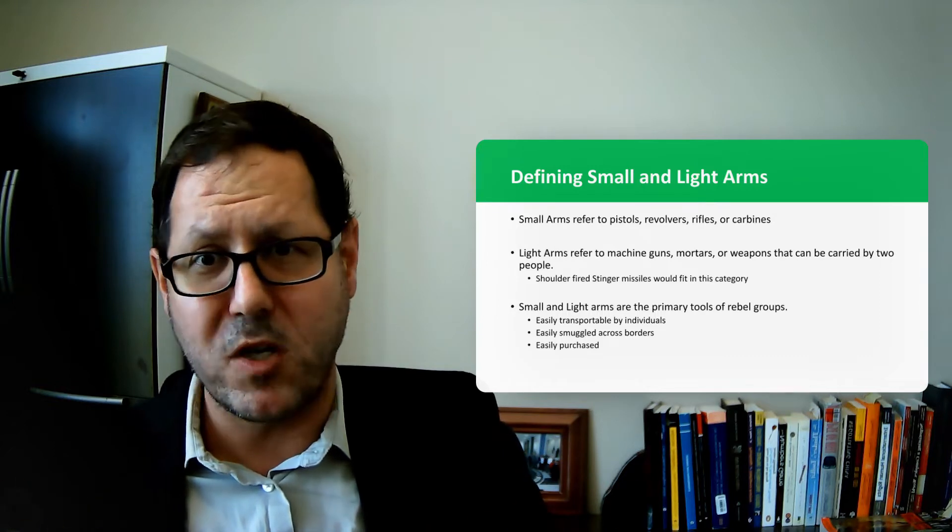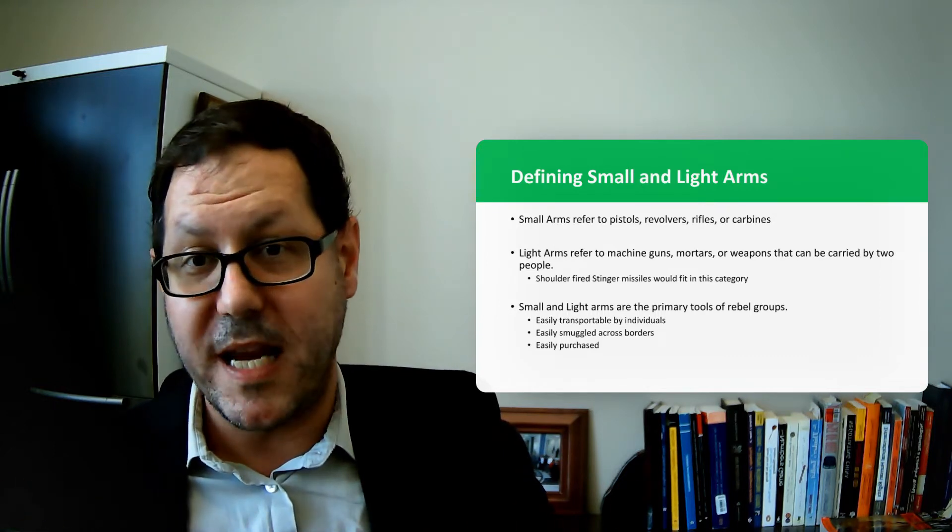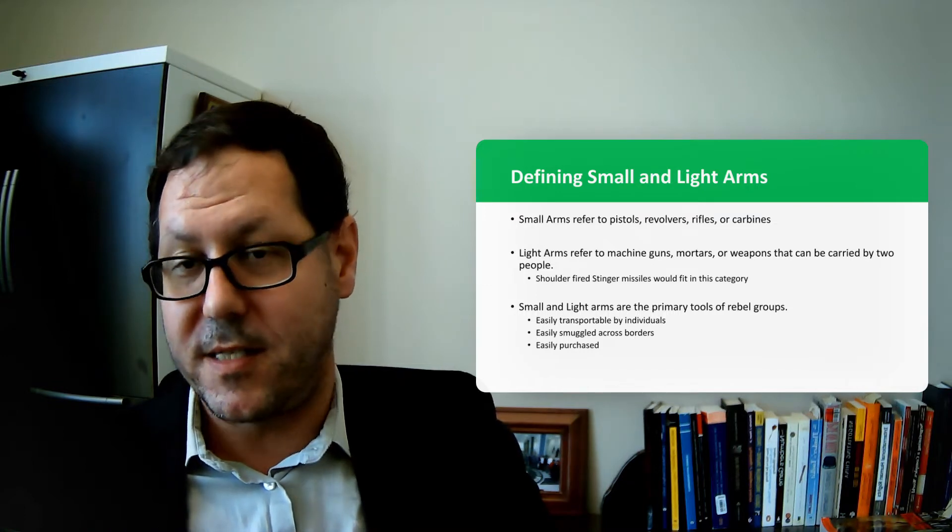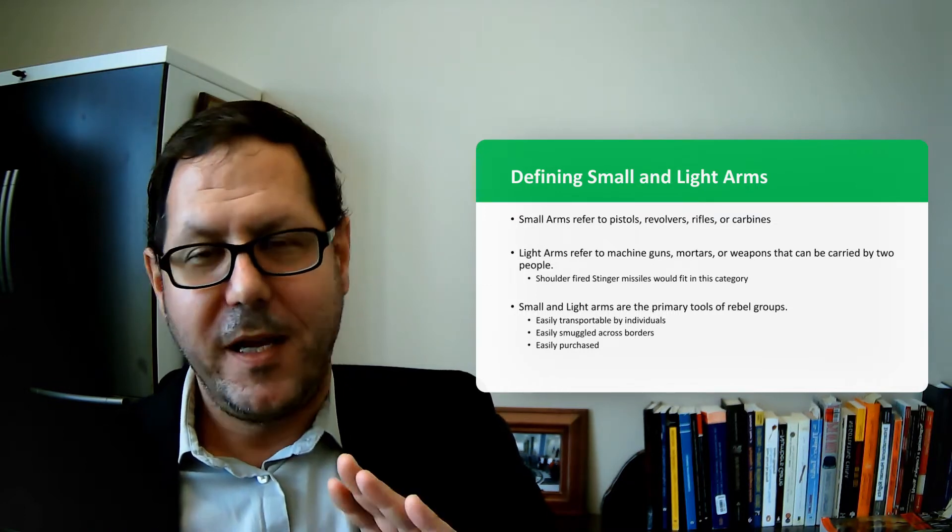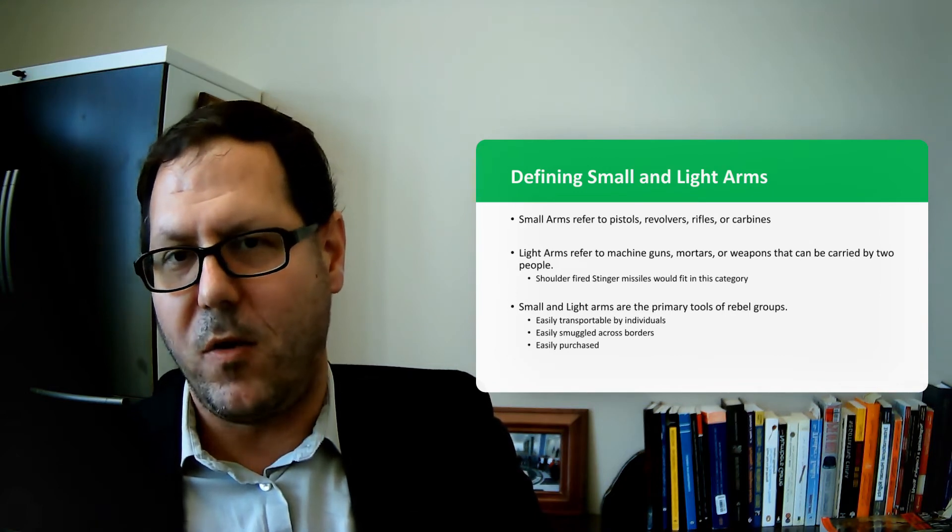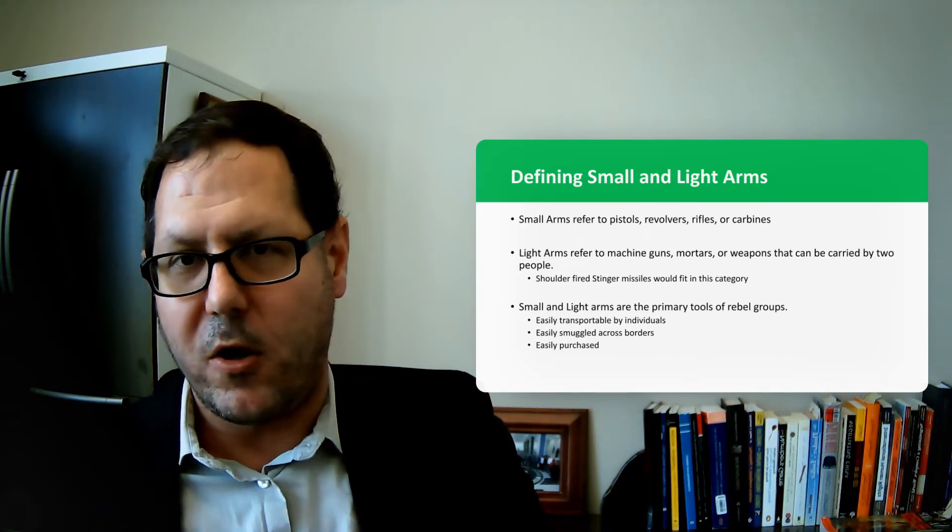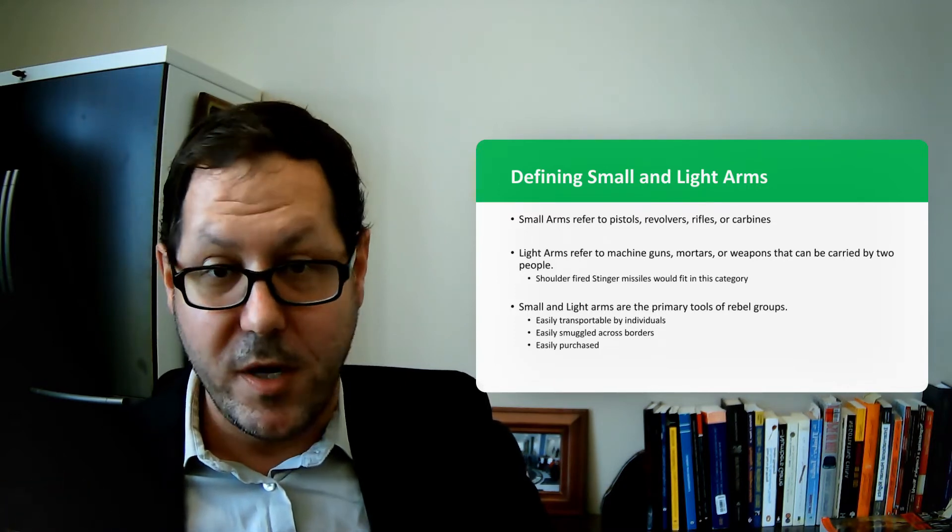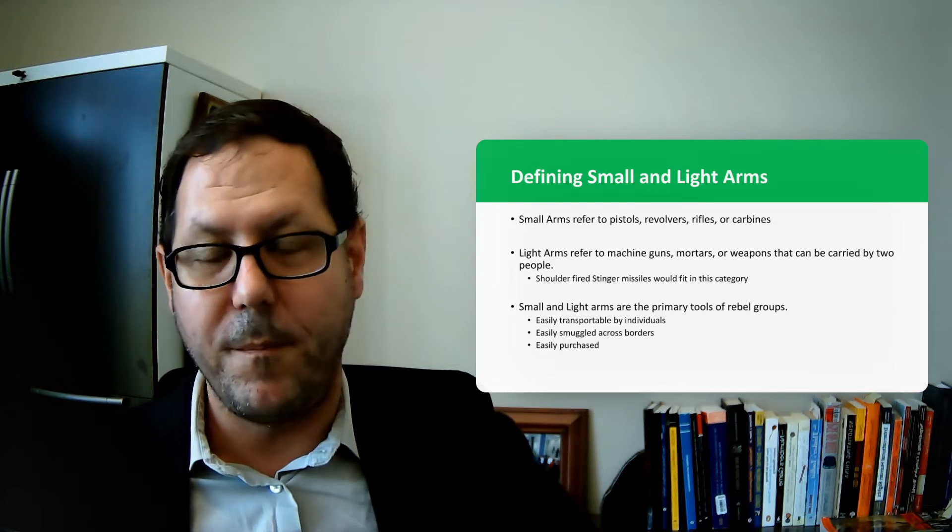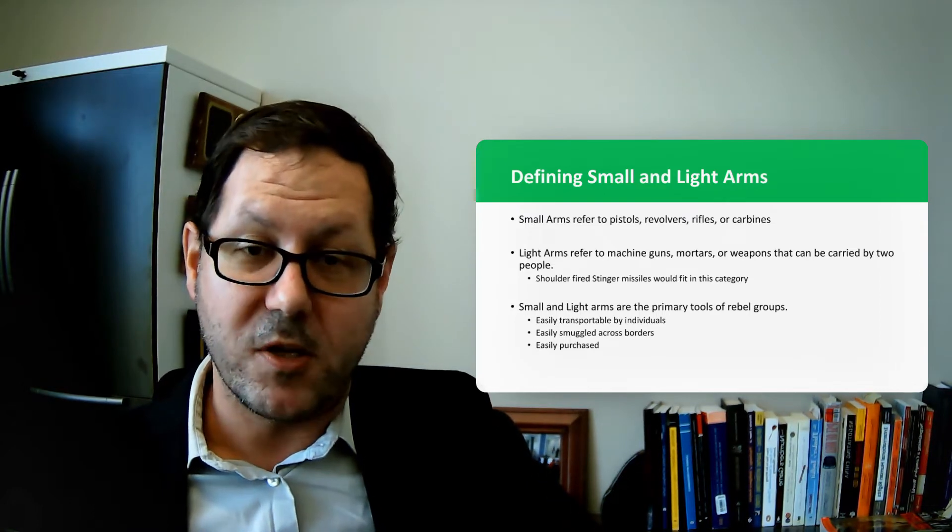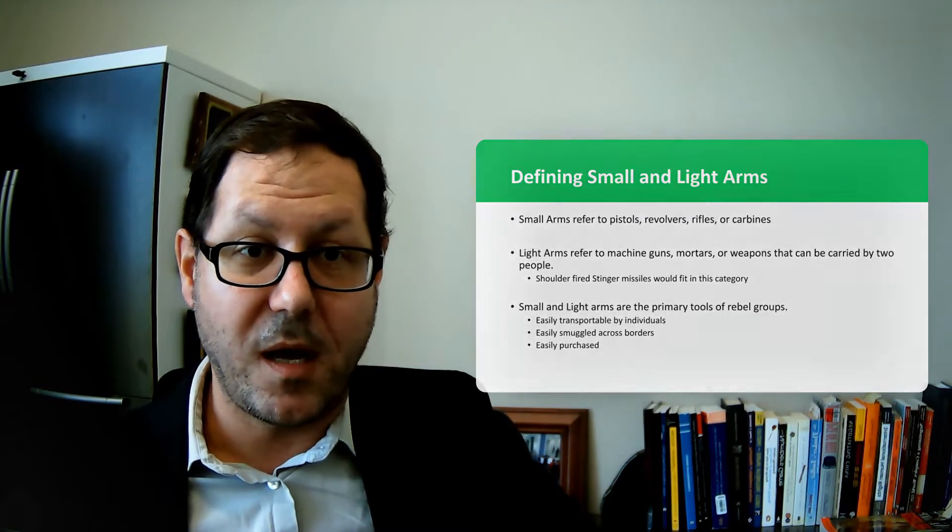The ability to move these things across borders and across rough terrain where the state maybe can't control that flow of weapons is really important. States are going to notice if you're shipping in fighter jets; they're less likely to notice if a handful of AK-47s are smuggled in the back of a truck along with some produce. These things are fairly cheap, easily purchased, widely in distribution in much of the developing world. Therefore, rebels can get their hands on them and use them in combat.